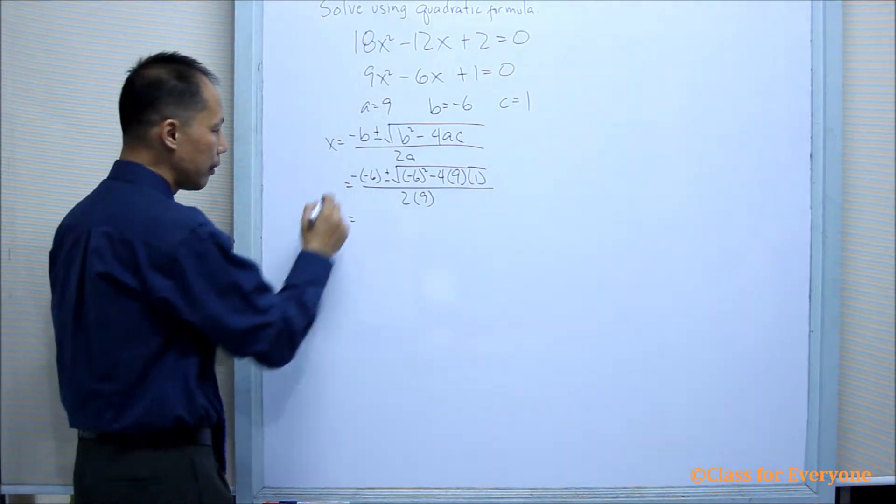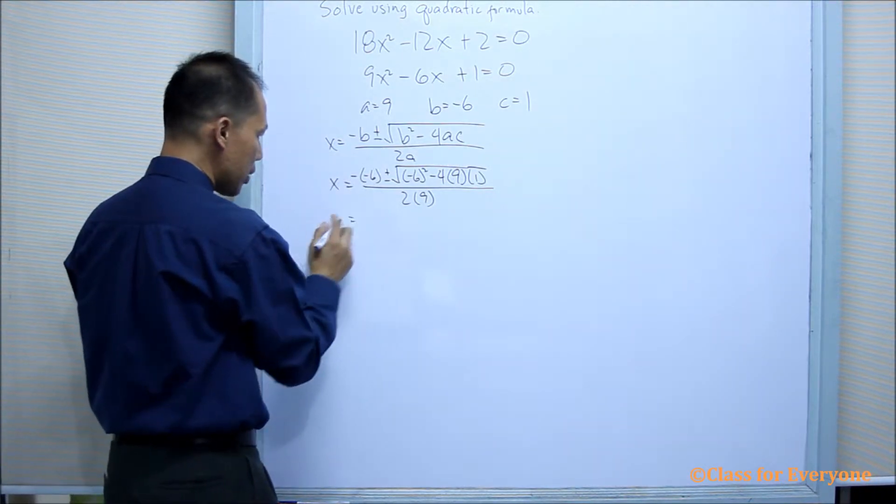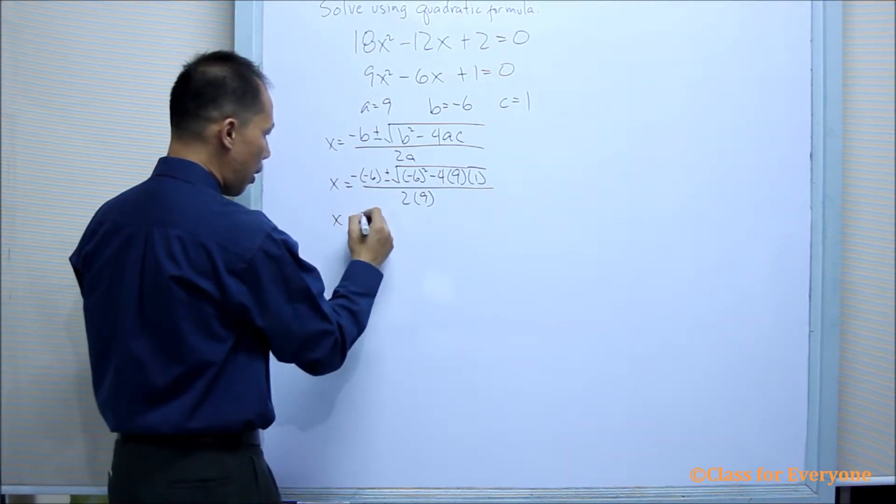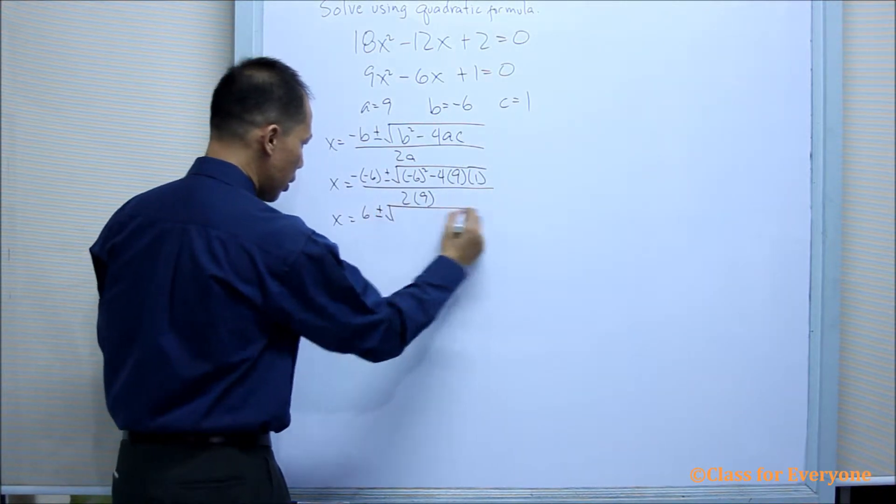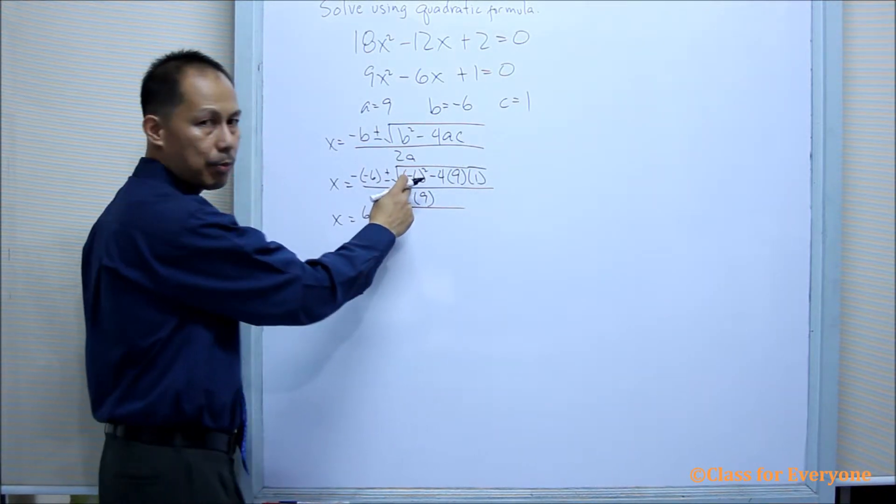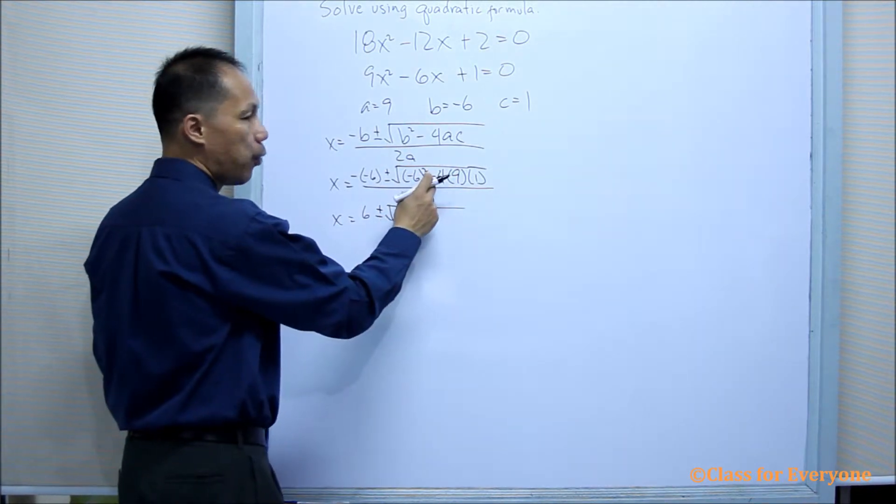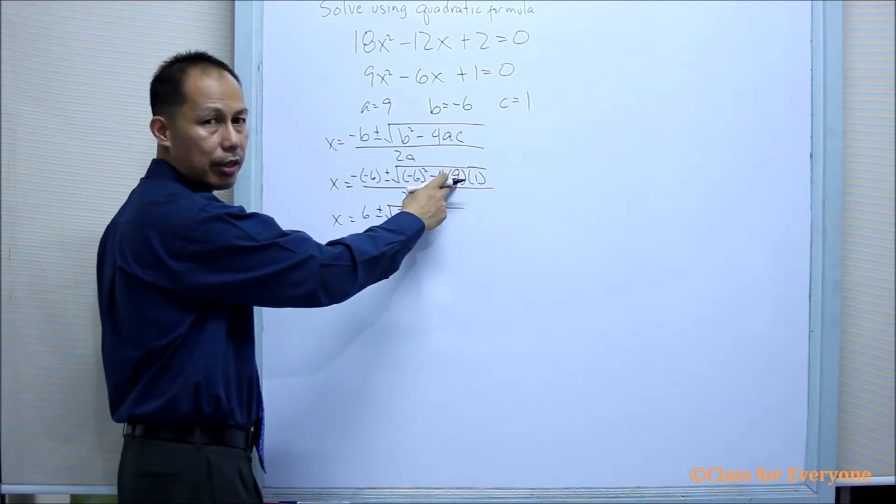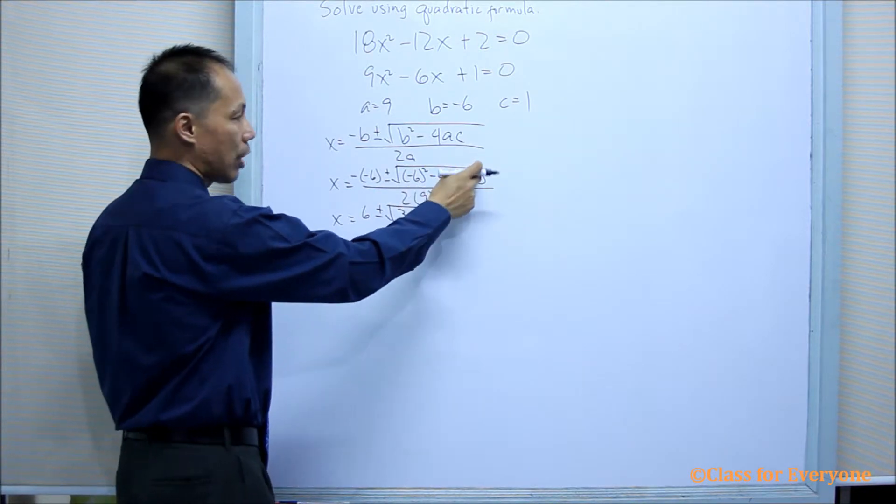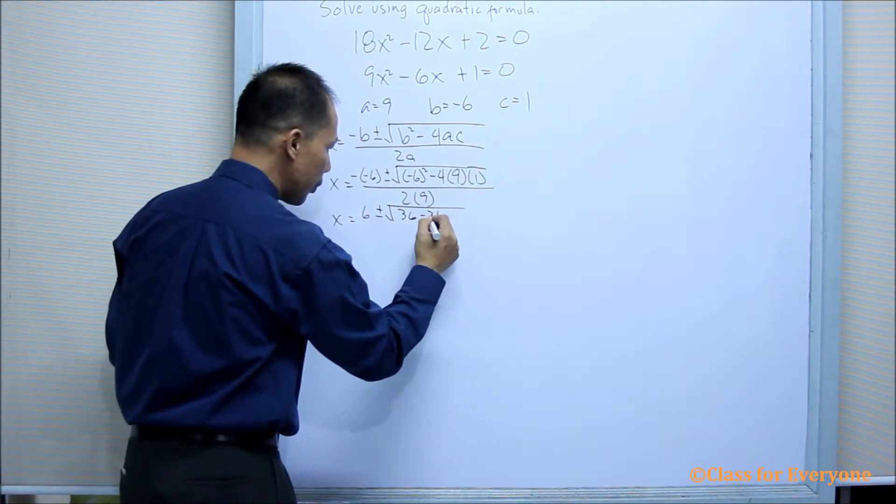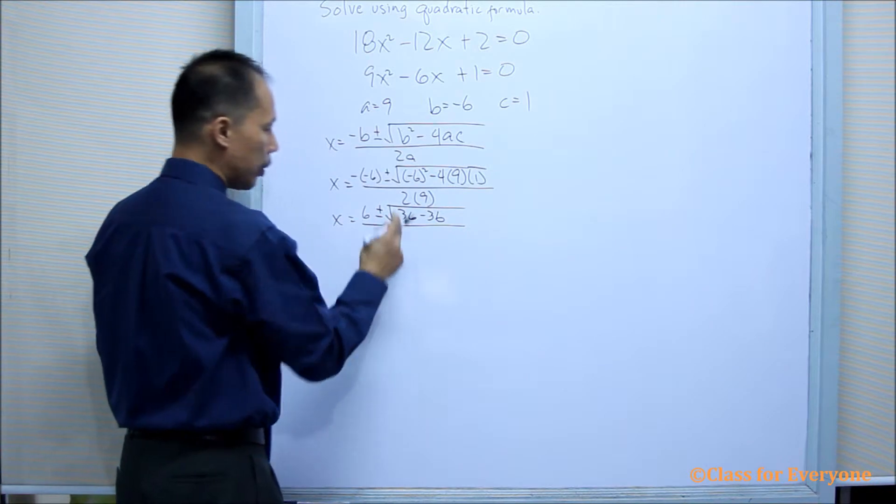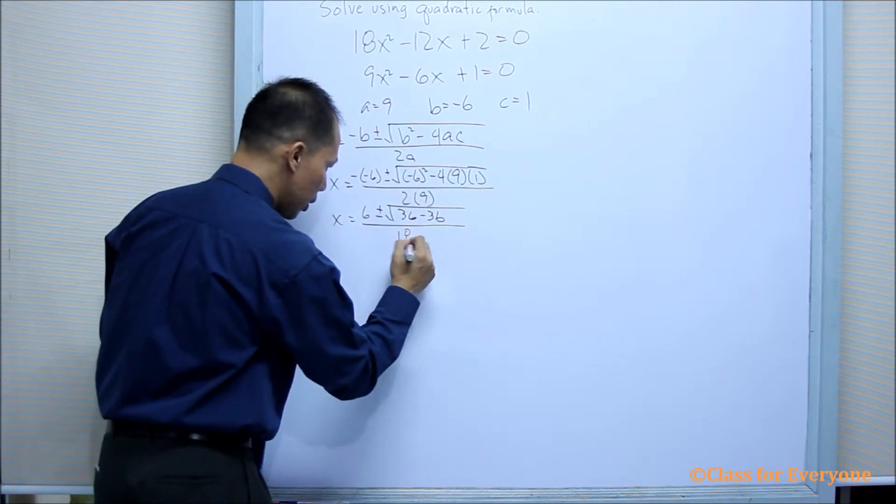Simplifying, the value of x will now be a positive 6, plus or minus the square root of negative 6 squared is 36. Negative 4 times 9 is 36. Negative 36 times 1 is negative 36. All over 2 times 9 is 18.